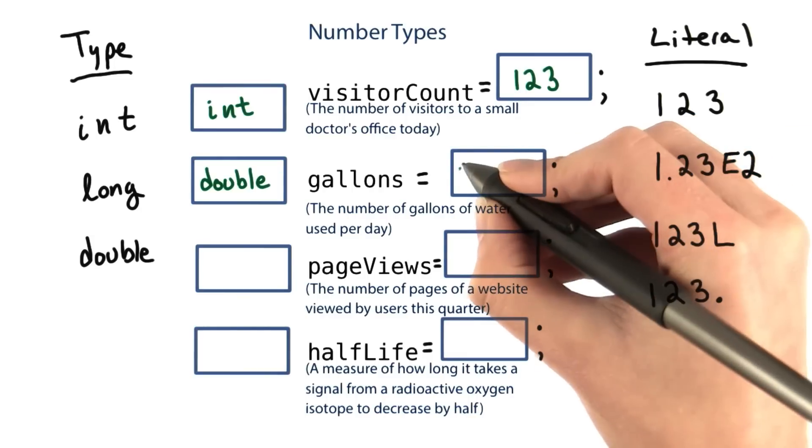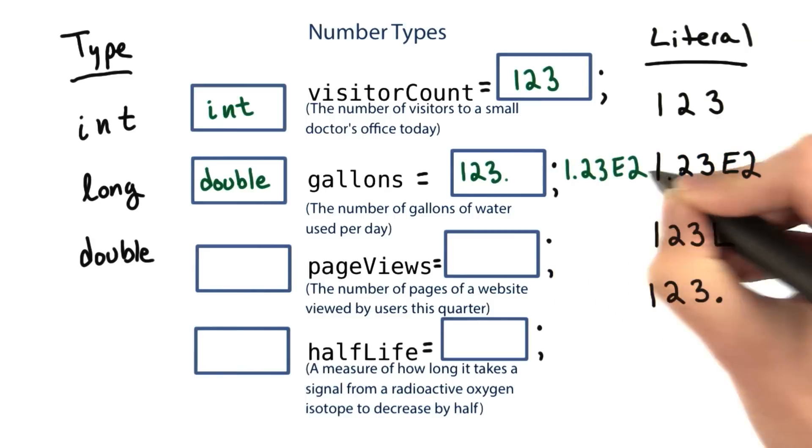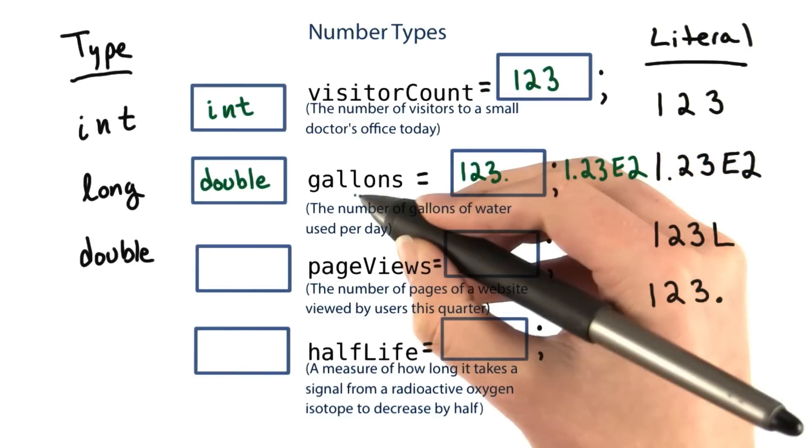So this should be a double. And we could write it as 123 point or 1.23e2. Either one of these would work for initializing this variable.